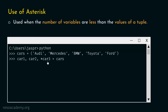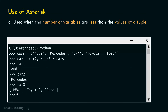Let's verify. Type car1 and hit enter — we get Audi. Type car2 and hit enter — we get Mercedes. Type car3 and hit enter — we get BMW, Toyota, and Ford, returned as a list. So when variables are fewer than the tuple items, use asterisk in front of the last variable to successfully unpack the remaining values.